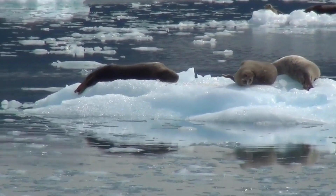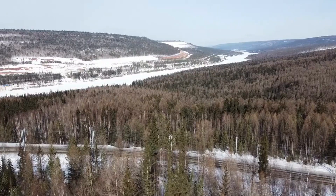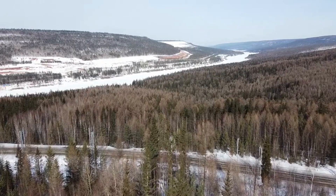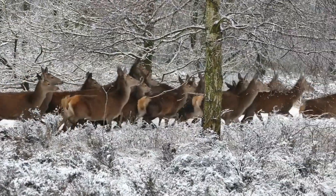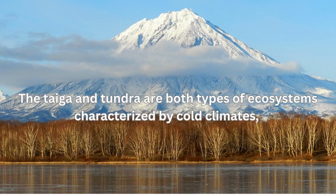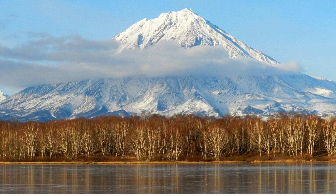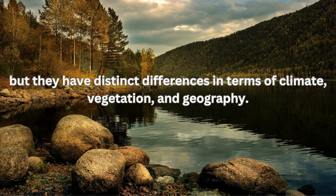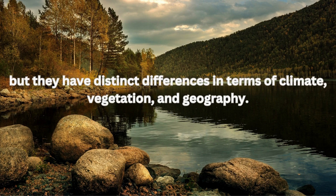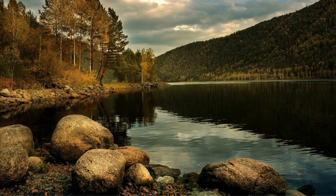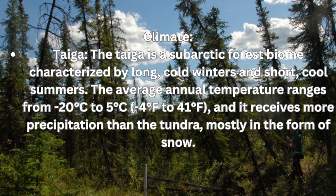In this video we're going to discuss the difference between tundra and taiga on the basis of their characteristics. The taiga and tundra are both types of ecosystems characterized by cold climates, but they have distinct differences in terms of climate, vegetation, and geography.